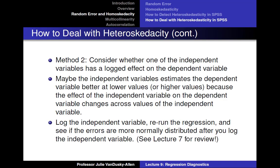Another way to deal with heteroscedasticity is to consider whether one of the independent variables has a logged effect on the dependent variable. Perhaps the independent variable estimates the dependent variable better at lower or higher values because the effect of the independent variable on the dependent variable changes across its values. In order to address this possibility, you can log an independent variable you think has a logged effect on the dependent variable, rerun the regression, and see if the errors are more normally distributed. If you forgot how to run and interpret logged independent variables in regression, please revisit Lecture 7, Substantive Effects.